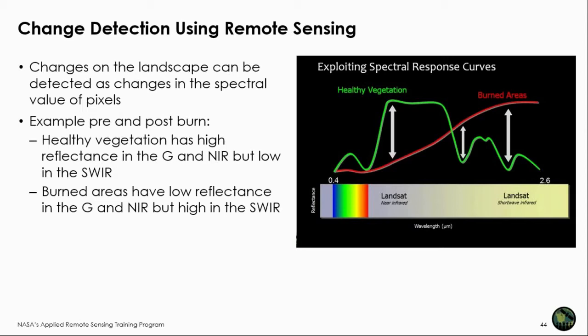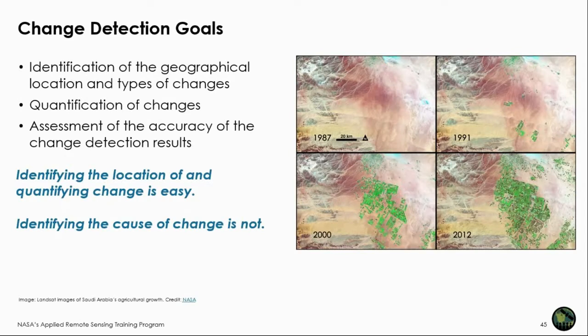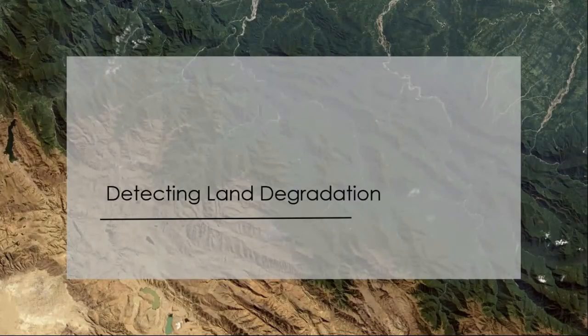We detect change using satellite imagery by detecting changes in the spectral values of pixels — pixels will have different values before and after change has occurred. Healthy vegetation has high reflectance in the near-infrared, while burned areas are the opposite, with low reflectance in the near-infrared. So you can use that information not only to detect burned areas but also to detect the severity of burns. Goals of change detection include identifying the location and type of change, quantifying the change, and assessing accuracy. Identifying the location and quantifying change is relatively easy; identifying what caused the change sometimes is not.